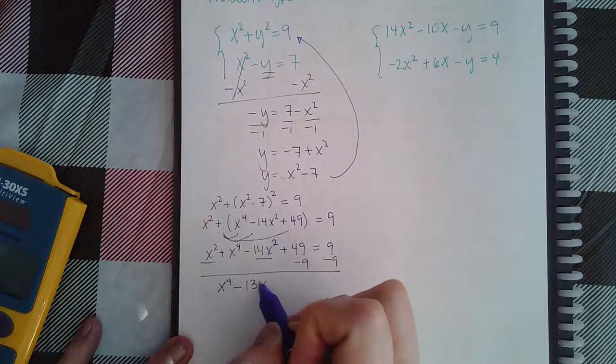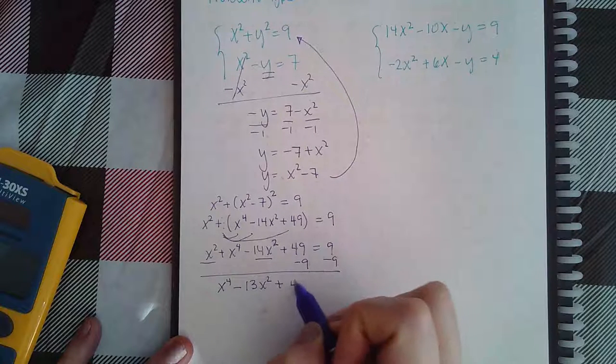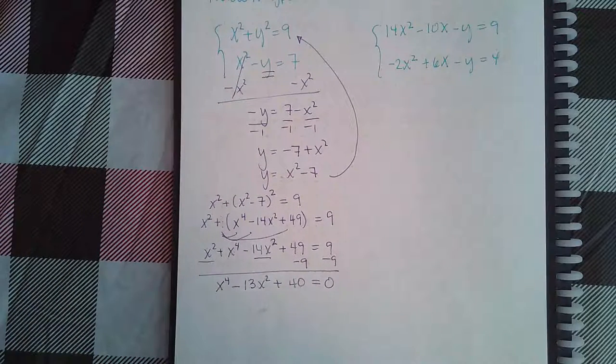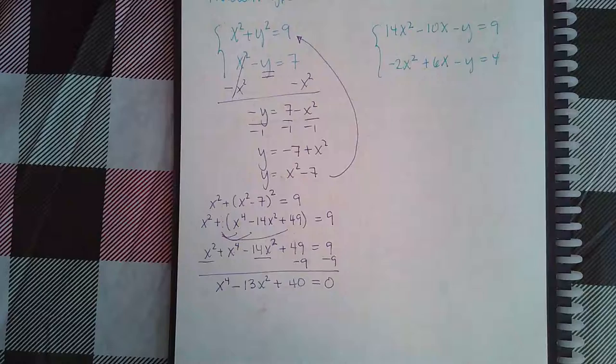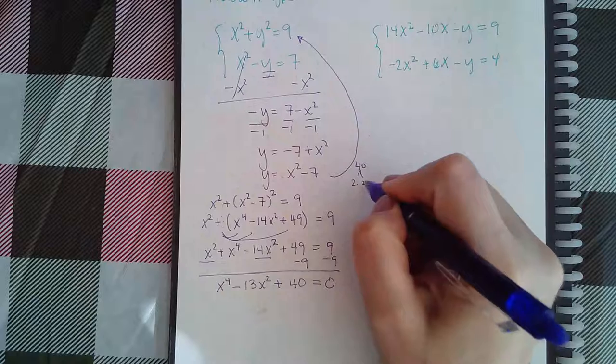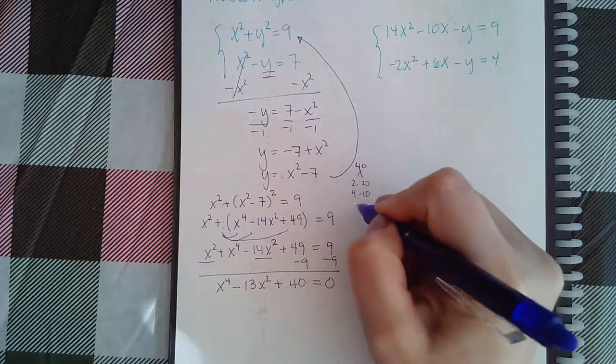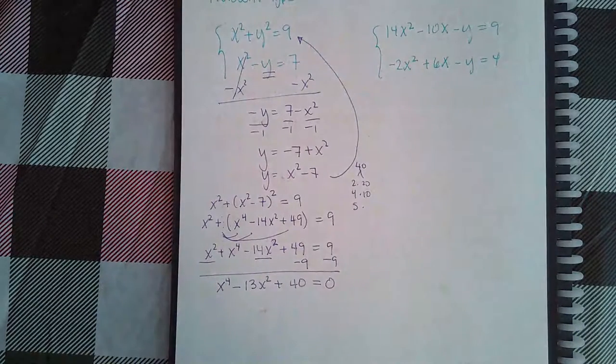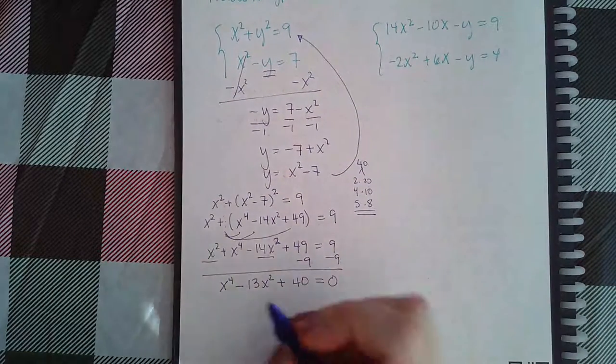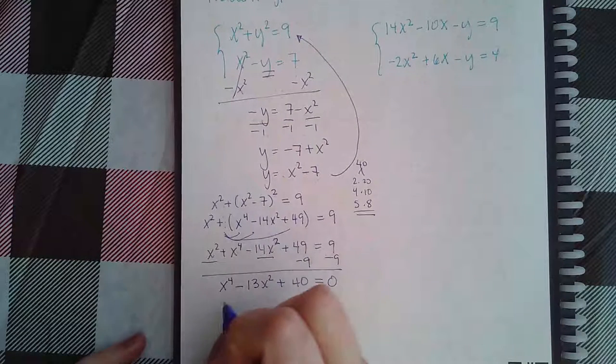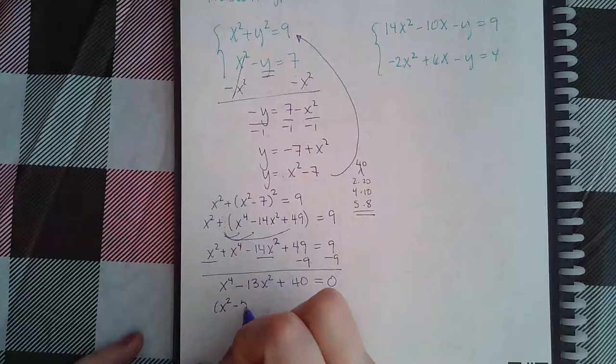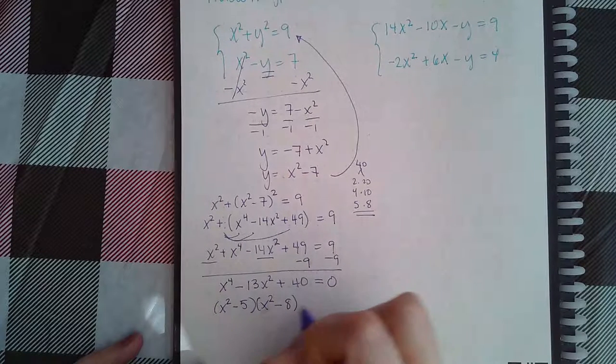When I combine like terms I get x⁴ minus 13x² plus 40 equal to zero. If I go through my factors, 40 divided by 2, that's 2 and 20, 4 and 10, 5 and 8, that actually gives me 13. So I'm going to have (x² minus 5)(x² minus 8).